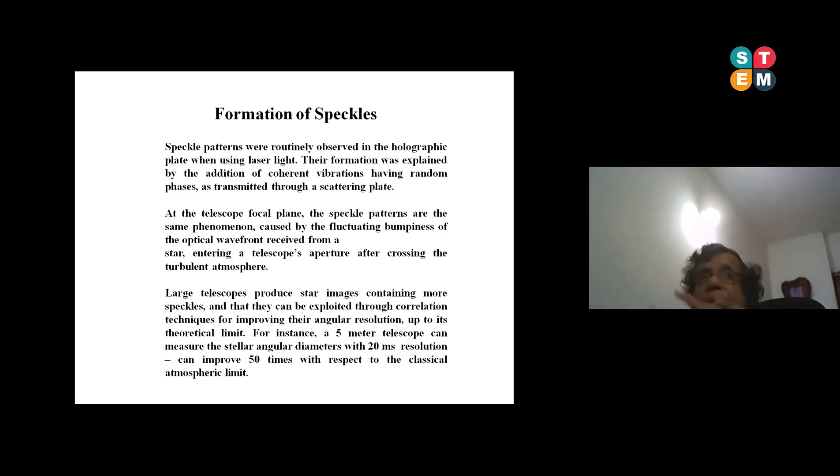At the telescope focal plane, the speckle patterns are also the same thing, caused by the fluctuating bumpiness of the optical wavefront received from a star entering a telescope aperture after crossing the turbulent atmosphere. Larger telescopes produce star images containing more speckles because it goes by lambda by r0 to the power six by five.